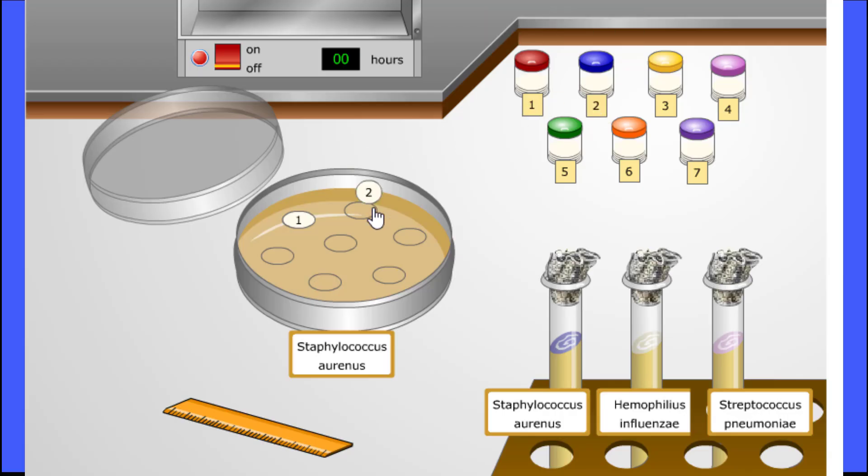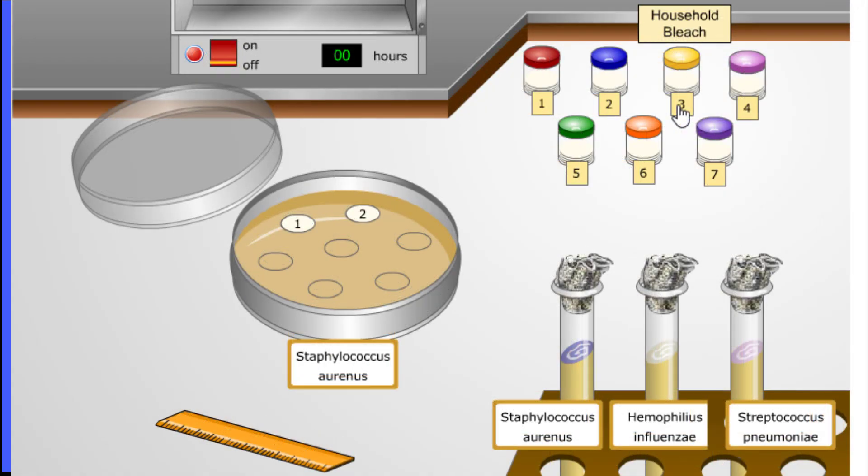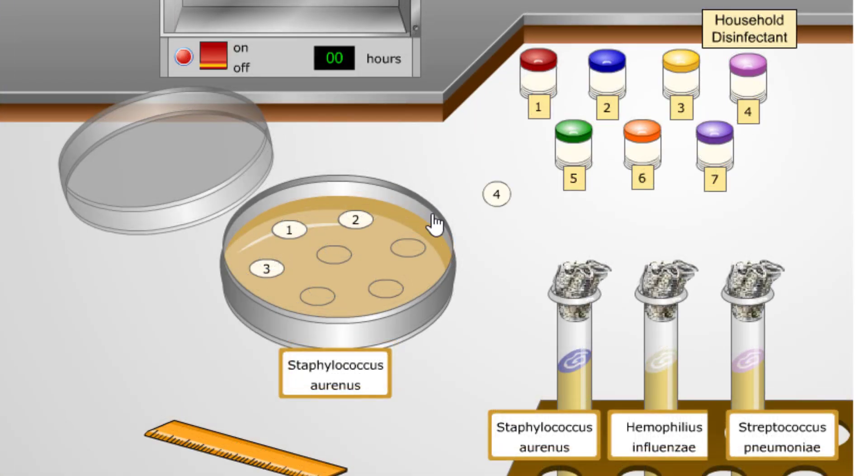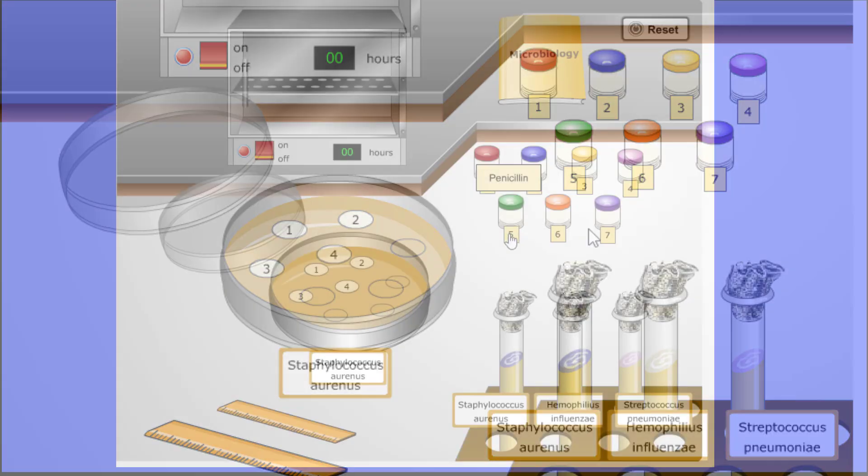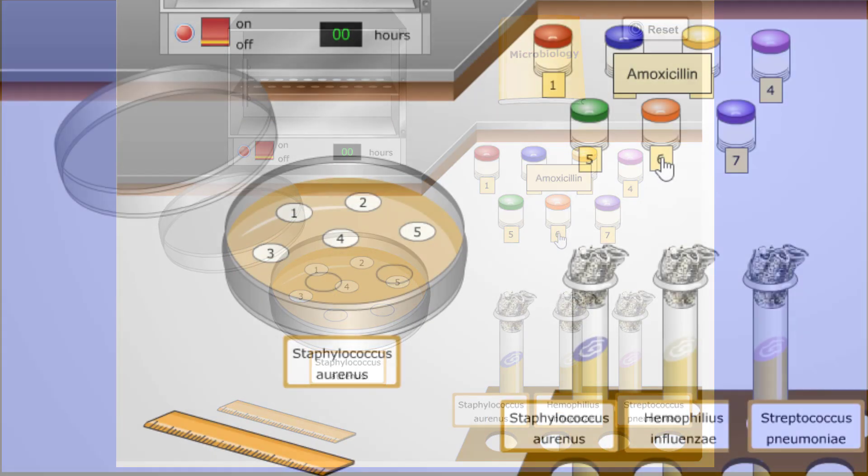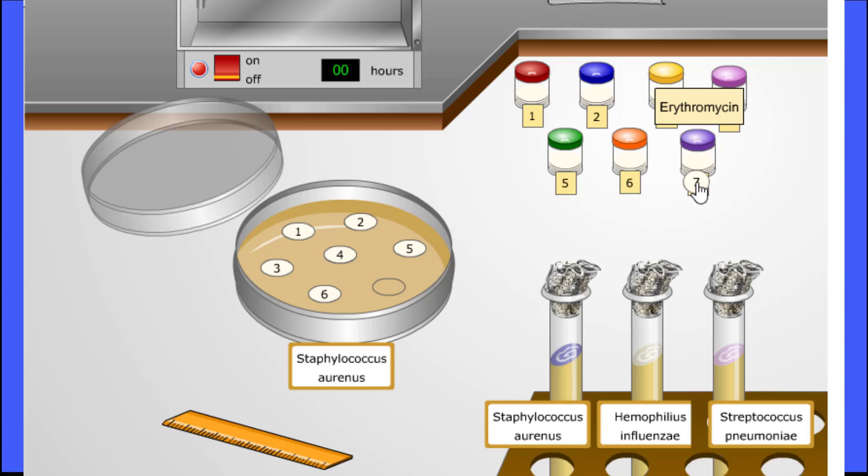Disc number 2 contains antibacterial soap. The disc from vial 3 contains household bleach. Disc 4 is going to contain household disinfectant. The disc from container 5 contains penicillin. The disc from container 6 will contain amoxicillin. And the disc from container number 7 will contain erythromycin.